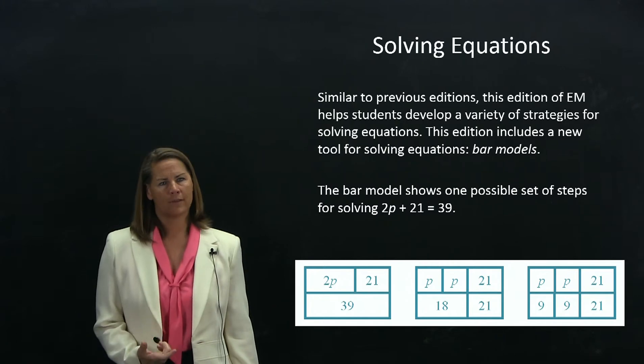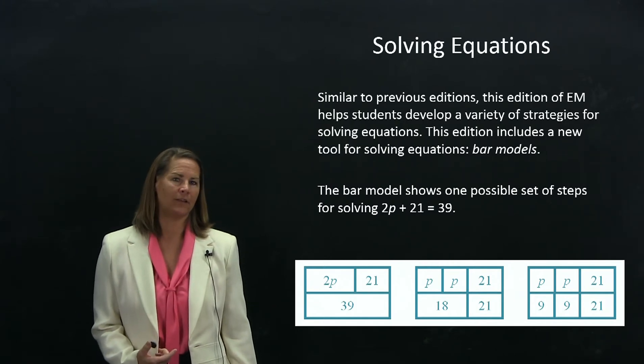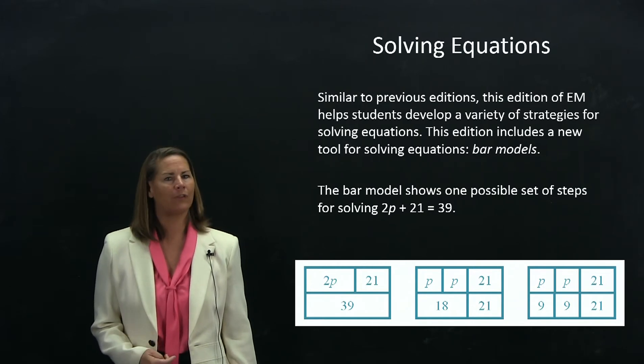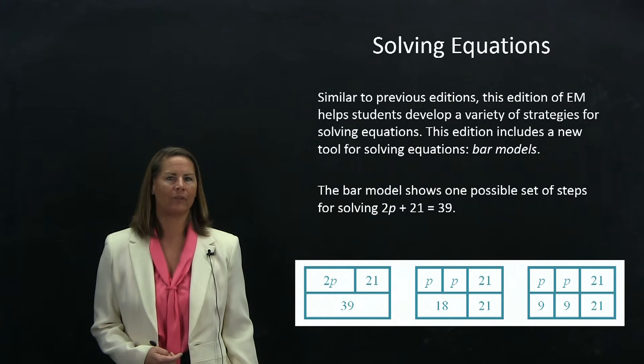Now I'm going to look at the two p's in the top part of the bar and the 18 in the bottom part. If I divide that 18 into two equal sections, I can see that p equals 9. Again, a very successful model for students in solving equations.